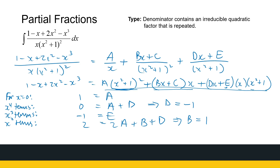I still need c. I see c will have an x term, so I look at the x terms. On the left I've got minus 1x. On the right, the first term has no x's, the second term gives cx, and the third term gives ex times x times 1, which is ex. So c plus e equals minus 1. I already know e equals minus 1, so c equals 0. We've got all five constants now and we're ready to integrate.